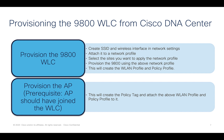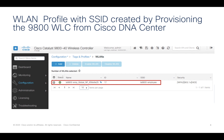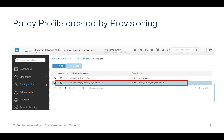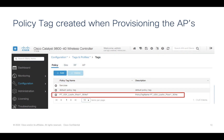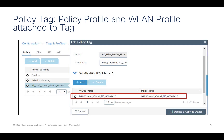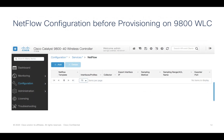The next step is provisioning the access points — they should have already joined the WLC before you do this. When you provision the access point, it will create the policy tag and attach the wireless LAN profile and policy profile that were created earlier to this tag. As you can see here, this is the wireless LAN profile created by Cisco DNA Center when the 9800 was provisioned, this is the policy profile, and this is the policy tag created when the access point was provisioned, with the wireless LAN profile and policy profile attached to it.